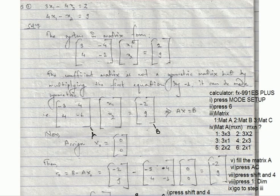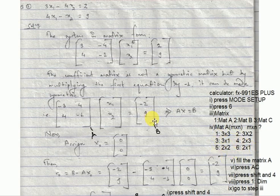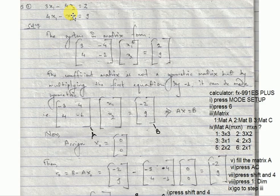Next, select matrix B as a 2x1 shape. Fill in matrix B with values minus 2 and 6. Then press calculate. So we can now calculate. We have defined the two-variable system with X0 initialized to [0, 0].